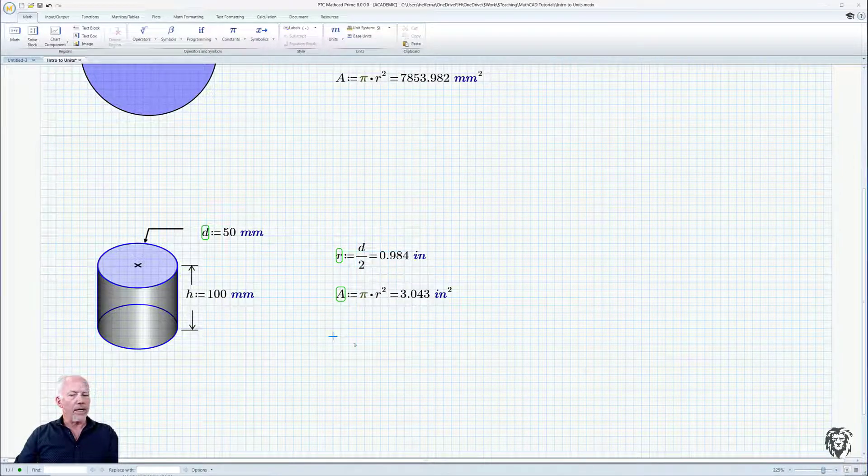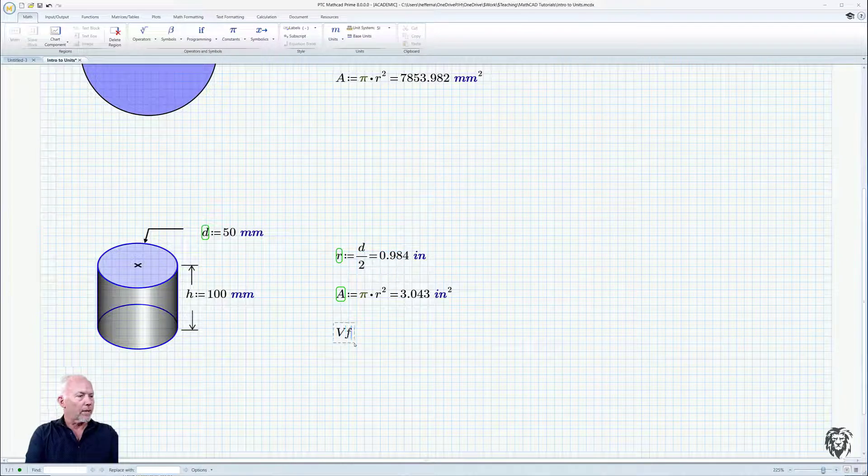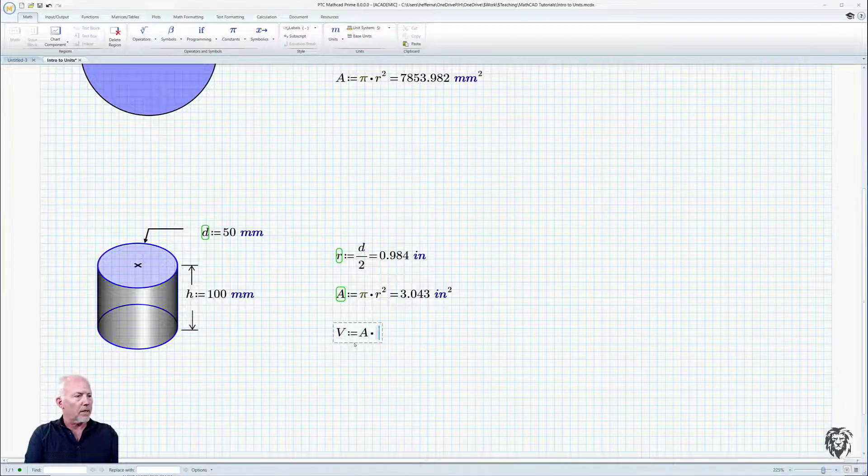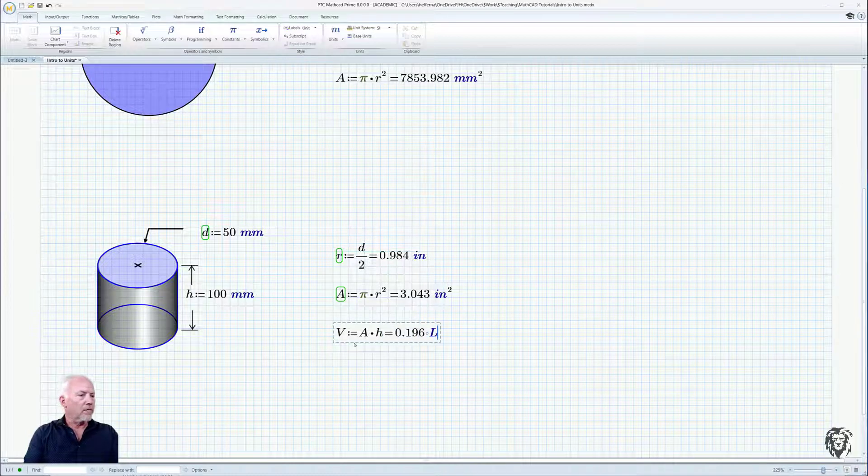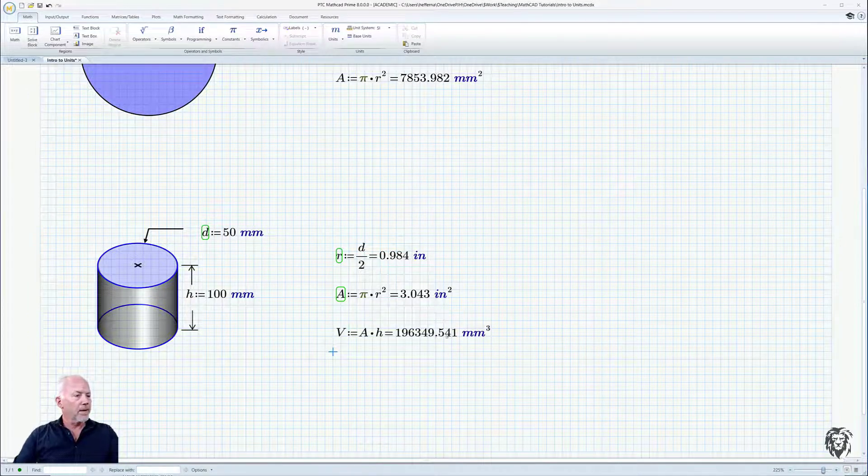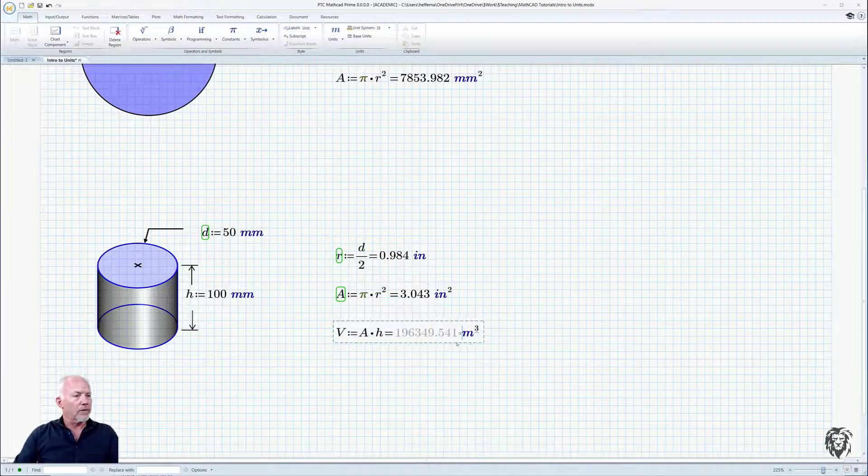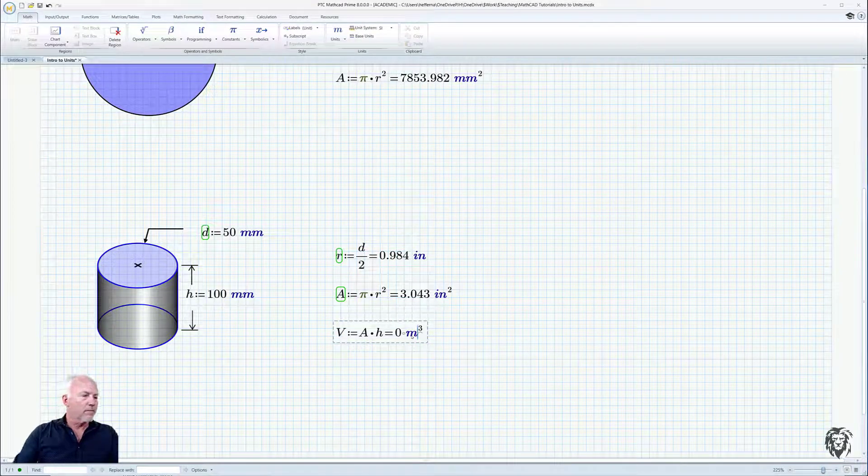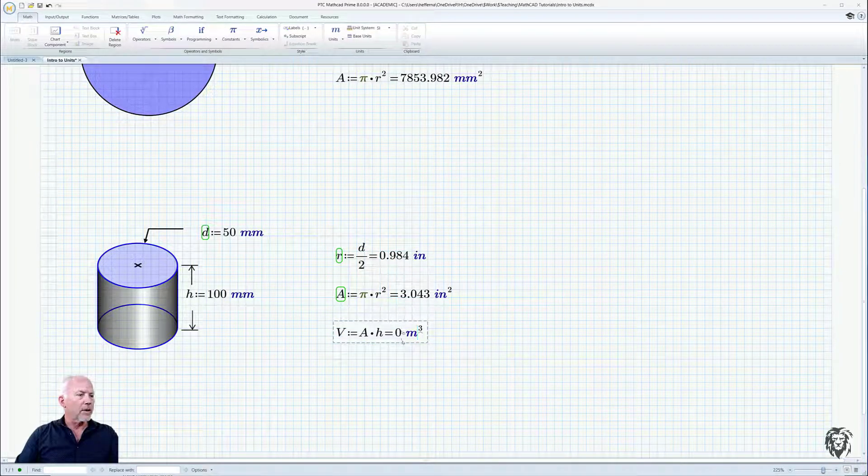And finally, we come down here and we want to know what the volume is. V equals A times our H equals, and it offers it up in liters of all things, but we could do it in millimeters cubed or we could do it in meters cubed.